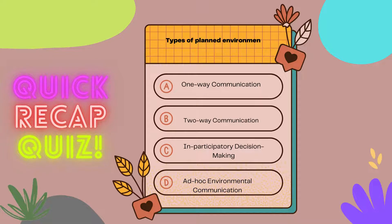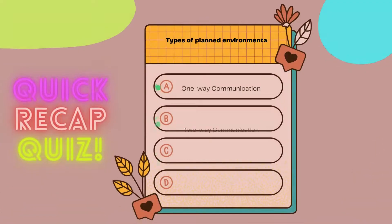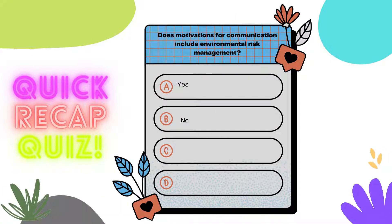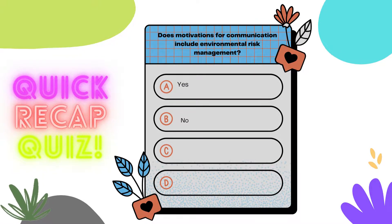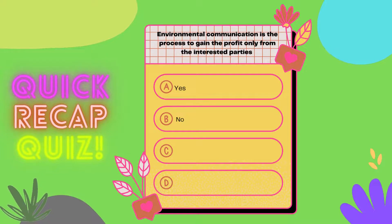Let's do some quiz. Are you ready? First question: What are the types of planned environmental communication? A) One-way communication, B) Two-way communication, C) Participatory decision making, D) Ad hoc environmental communication. The answer is A, B, and C. Second question: Does motivation for communication include environmental risk management? A) Yes, B) No. The answer is A, Yes. Third question: Environmental communication is the process to gain profit only from interested parties. A) Yes, B) No. The answer is B, No. That's all from this video. See you in the next topic, which is the Principles of Environmental Communication.